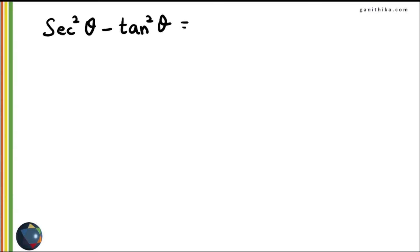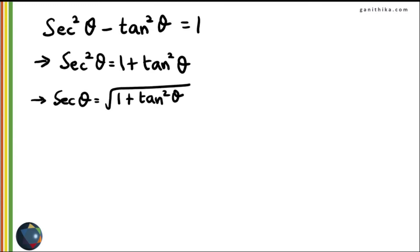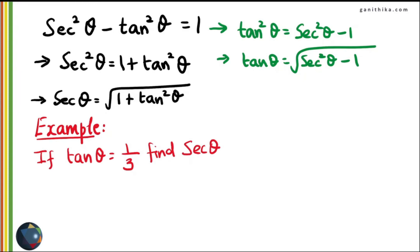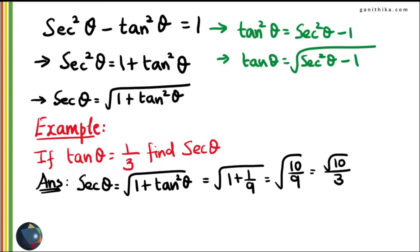For the identity sec²θ - tan²θ = 1, secant in terms of tan is sec θ = √(1 + tan²θ), and tan theta in terms of secant is tan θ = √(sec²θ - 1). For example, if tan θ = 1/3, find sec θ: substituting gives √(1 + 1/9) = √(10/9) = √10 / 3.